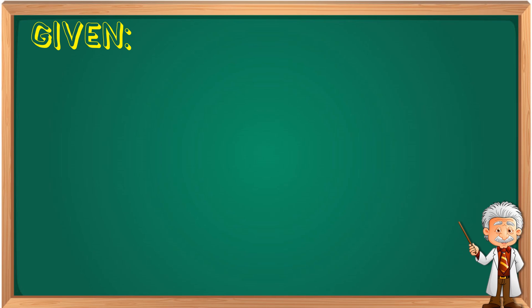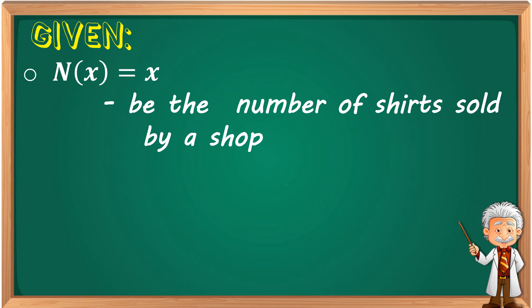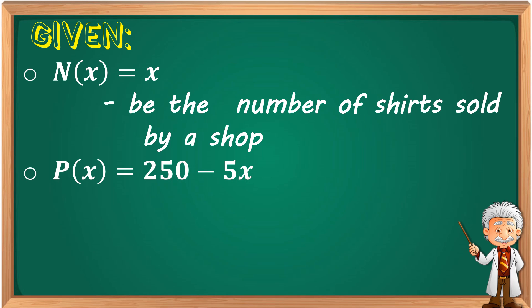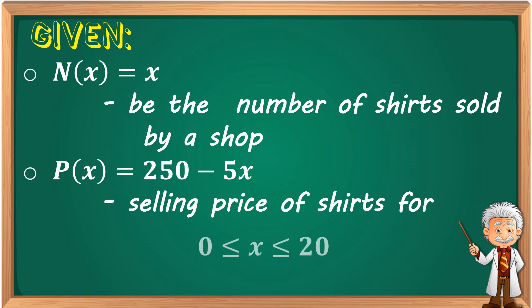Let's identify the given for you to understand the problem. Let n(x) = x be the number of shirts sold by a shop — meaning n(x) = x is the quantity of shirts. And p(x) = 250 − 5x is the unit price of every shirt, for 0 ≤ x ≤ 20. If a customer buys between 0 to 20 shirts, the price will be p(x) = 250 − 5x.